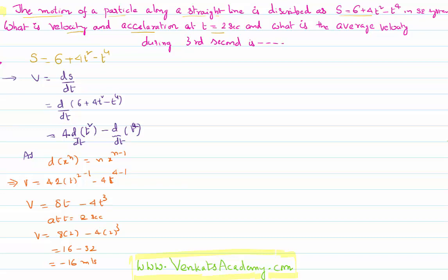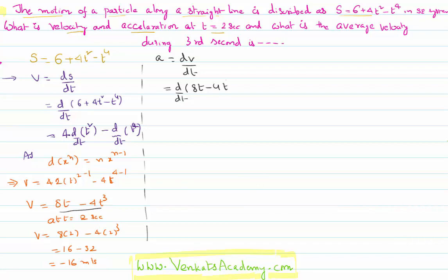Now let's go to the next part of the problem: finding the acceleration. Acceleration is basically defined as rate of change of velocity. We have just now calculated velocity after differentiating displacement with respect to time, and we got that value as v = 8t − 4t³.